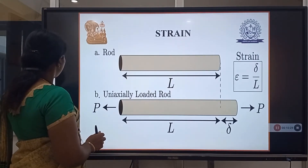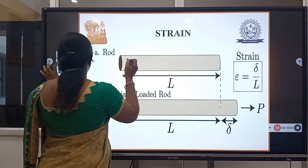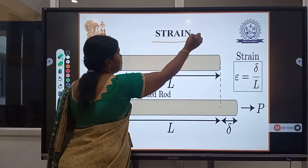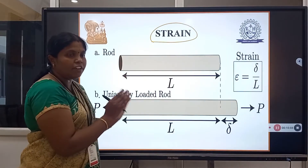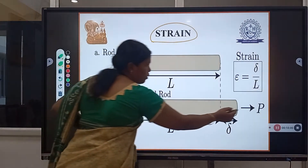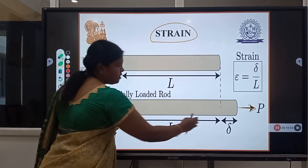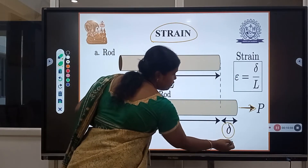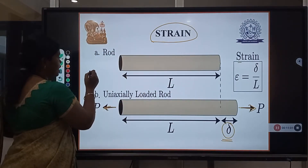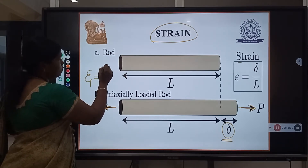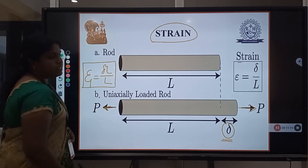Next is strain. If we apply some forces, the body will get some deformation. That deformation is known as strain. If we apply a load P along the axis of the body, the length will get some deformation. This deflection is known as strain. The strain formula is epsilon ε = ΔL/L, that is change in length divided by original length. This is the strain formula.